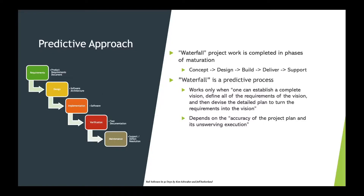Waterfall is a predictive process, which means that it can only be effectively applied when there is very little uncertainty expected as the project is executed. The requirements need to be well understood, as well as the method of achieving them, which must be highly controlled and with minimal variability. Success of a predictive approach depends on the level to which the plan can be adhered to. It must be possible to completely define the requirements before implementing the design, fully implement the design before implementing the software, and fully test the software with minimal discoveries that impact any of the prior phases.